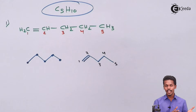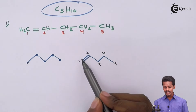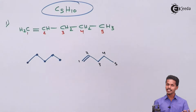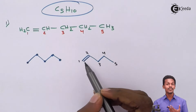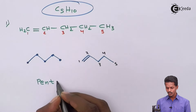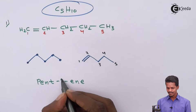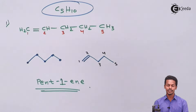We also need to provide the IUPAC name. The molecule consists of five carbon atoms in a straight chain, making it 'pent-' based, giving 'pentene.' Since the carbon-carbon double bond is at carbon number one, the IUPAC name of this first isomer is pent-1-ene.